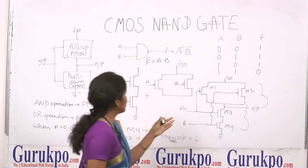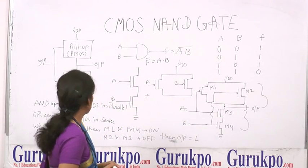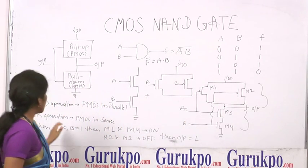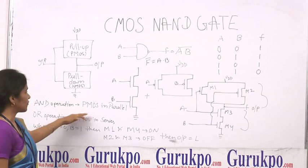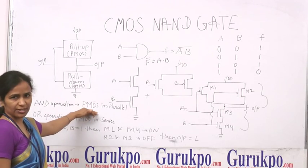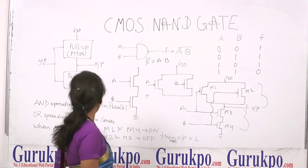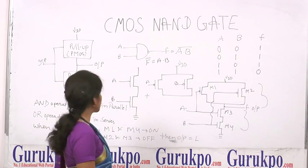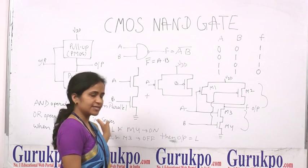So firstly we design the CMOS NAND gate. According to the design rule, the NAND operation is performed by PMOS transistors connected in parallel, and the AND operation is performed by PMOS transistors connected in series.